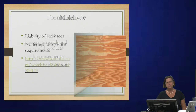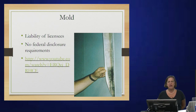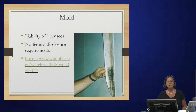Now on to mold — the fun stuff. Regarding liability of licensees: licensees have been held liable for the presence of mold. So if you know it's present, you need to disclose. There are no federal disclosure requirements, but you would not want to hide the presence of mold. Failing to disclose could present legal problems to you if you happen to be a real estate licensee.